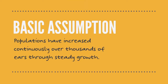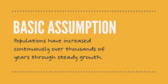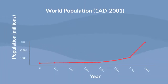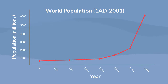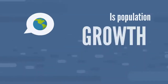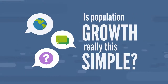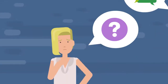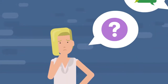Most people assume that human populations have increased continuously over thousands of years through steady growth. This graph, which you've likely seen before, would seem to support that assumption. But is population growth really this simple? Human history tells a different story — one of population booms and busts.